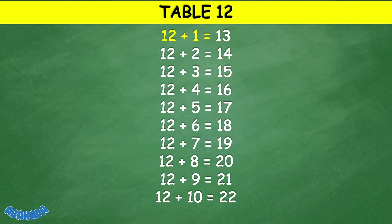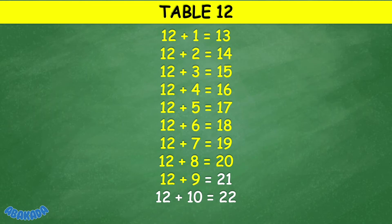Table 12: 12 plus 1 equals 13, 12 plus 2 equals 14, 12 plus 3 equals 15, 12 plus 4 equals 16, 12 plus 5 equals 17, 12 plus 6 equals 18, 12 plus 7 equals 19, 12 plus 8 equals 20, 12 plus 9 equals 21, 12 plus 10 equals 22.